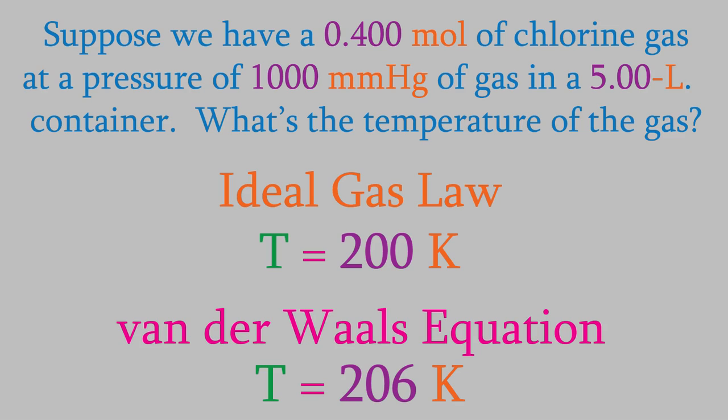Remember, we got 200 Kelvin when we calculated this using the ideal gas law, so we got an answer that was about 3% different when we used the more accurate van der Waals equation. That's a significant difference, so the van der Waals equation definitely gave us a noticeably better result.